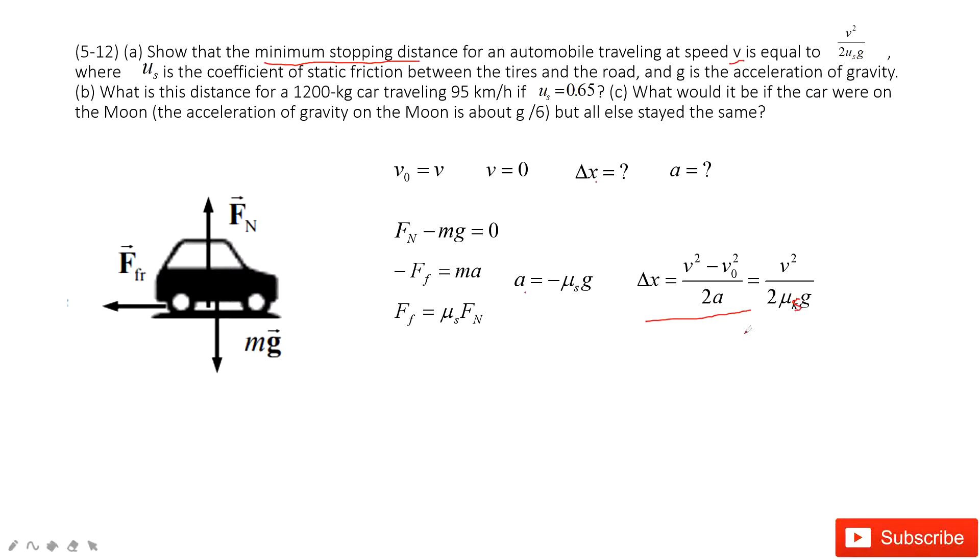The next one tells you we know the quantities for μ_s, for the initial velocity v, and also the mass for this car. Can you find the distance? Sure. Super easy. We just input these quantities.